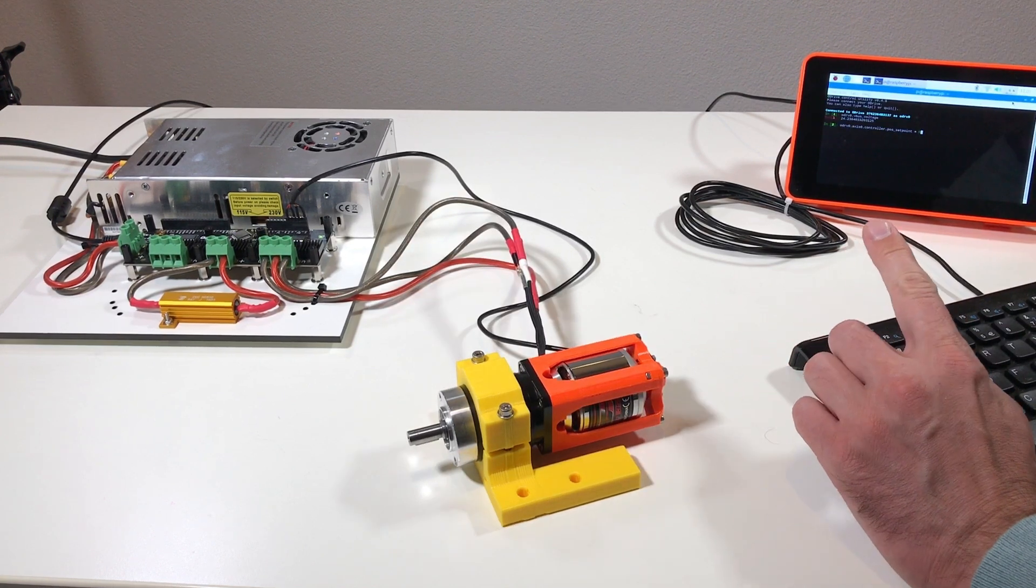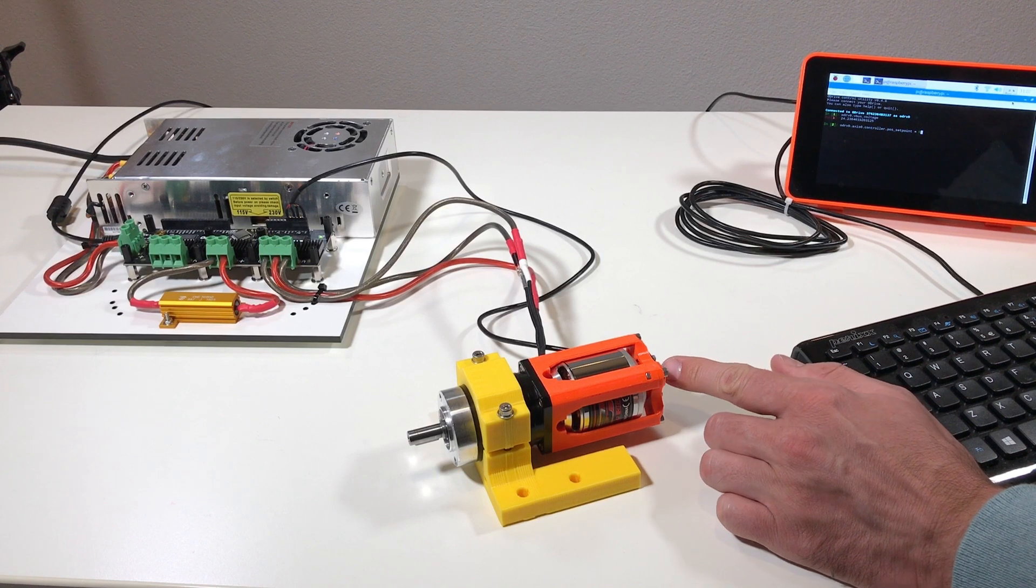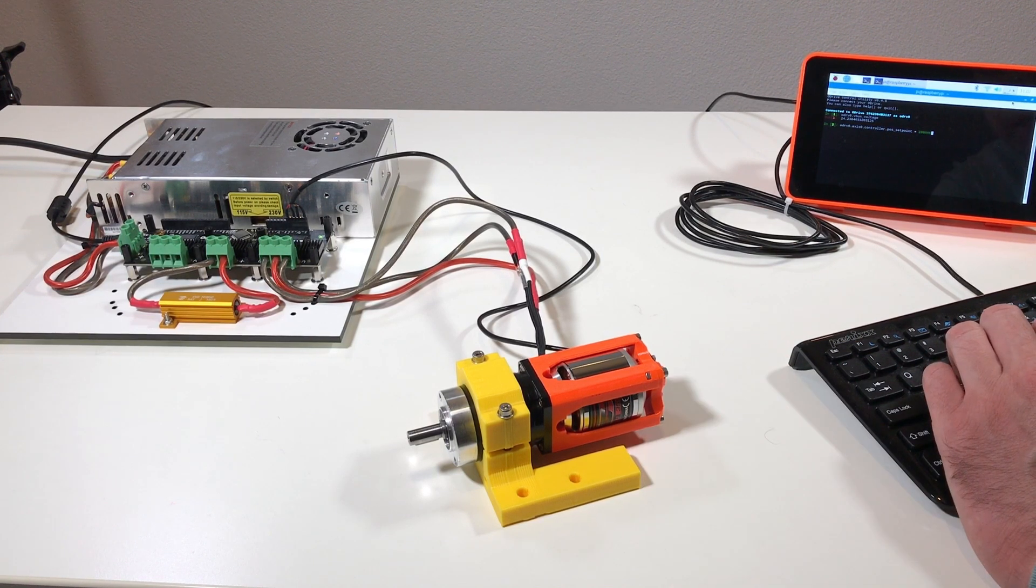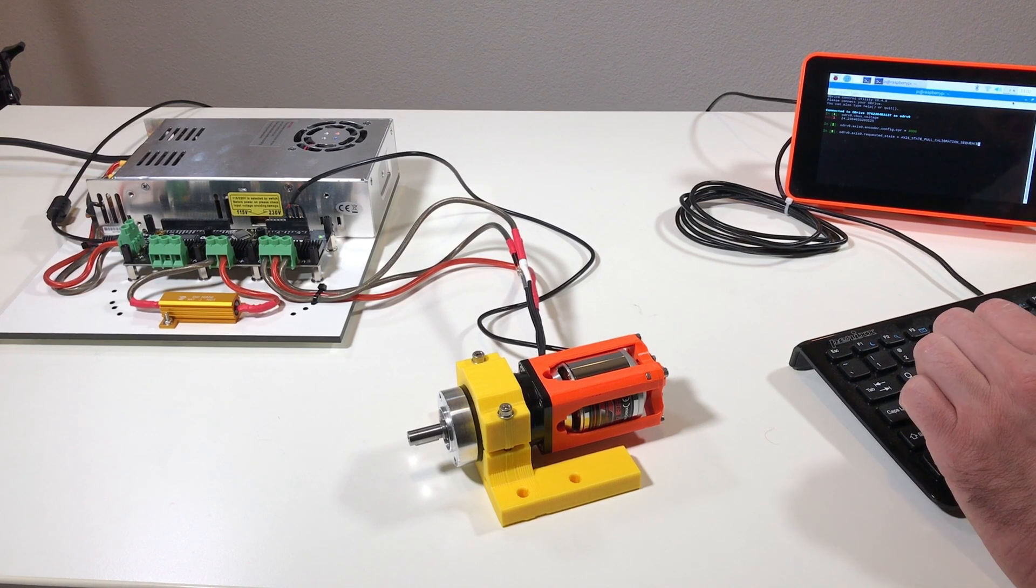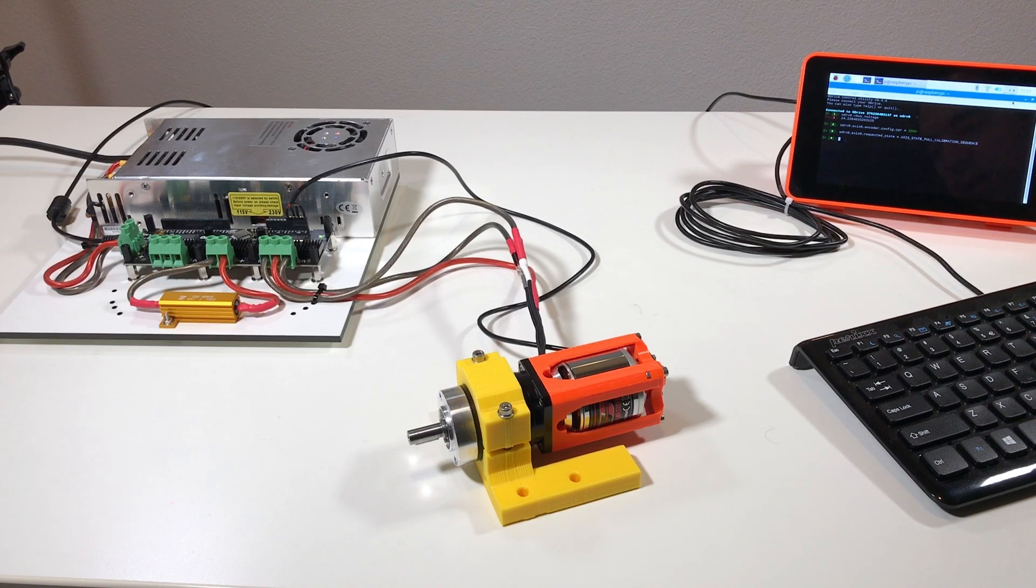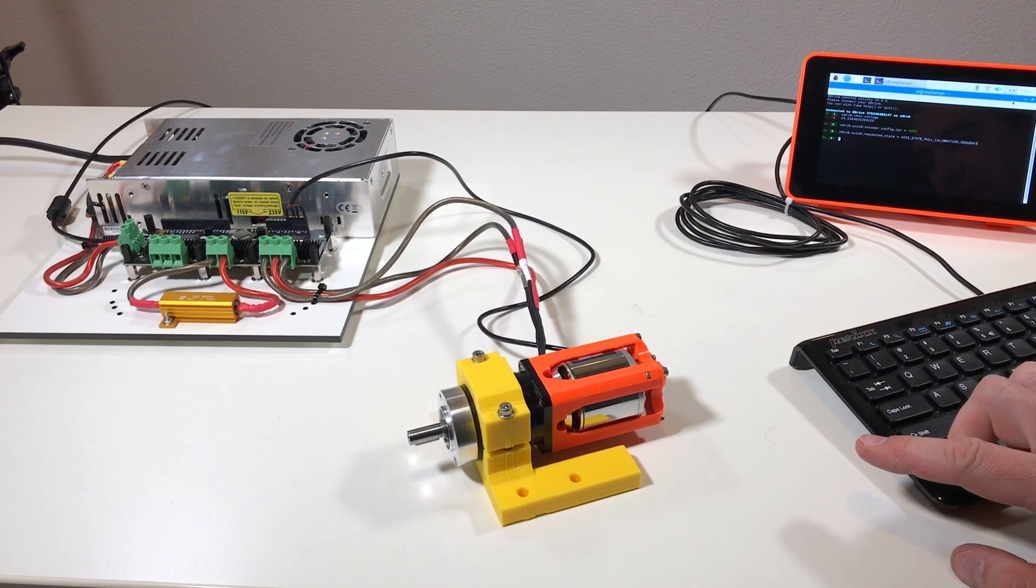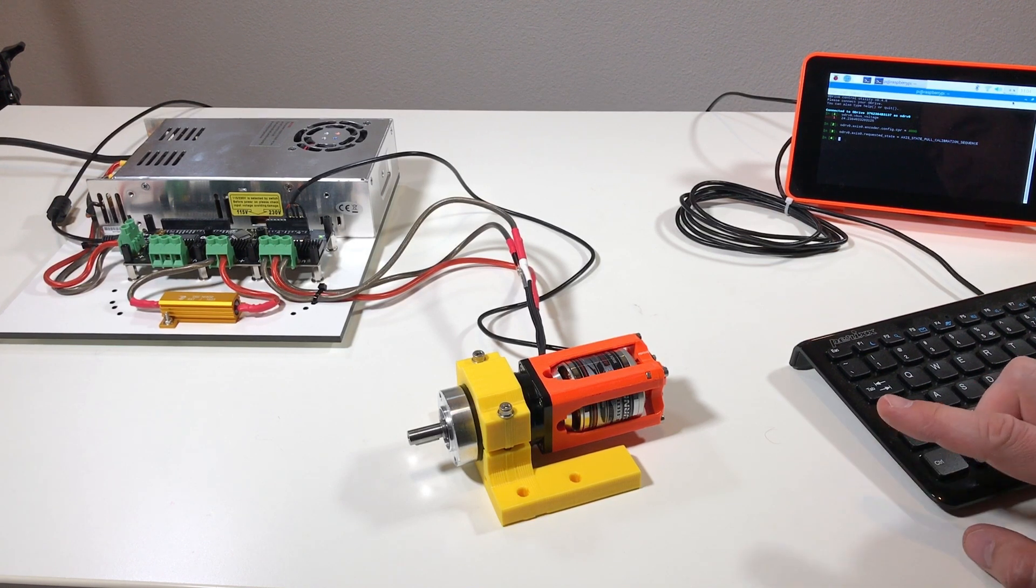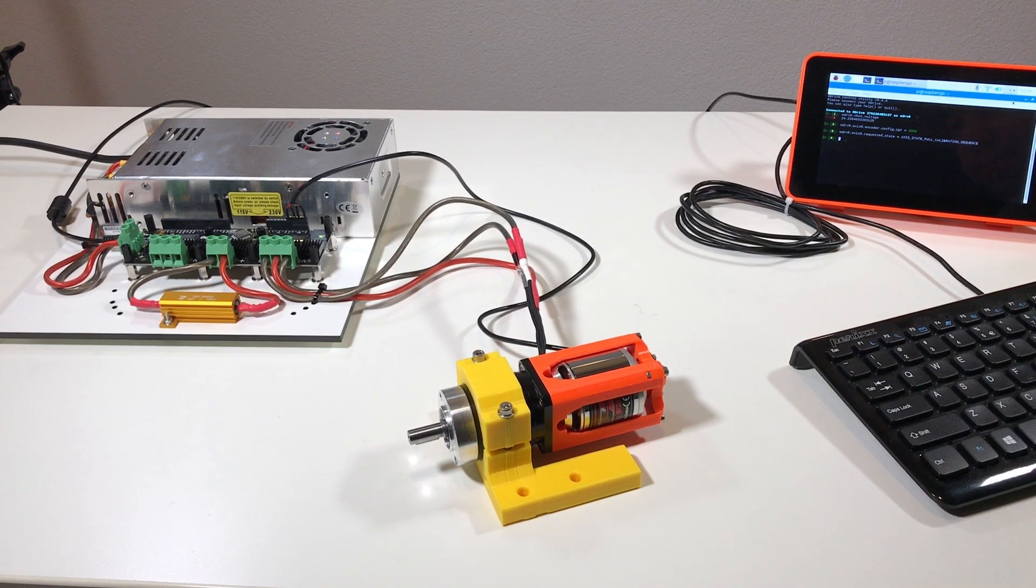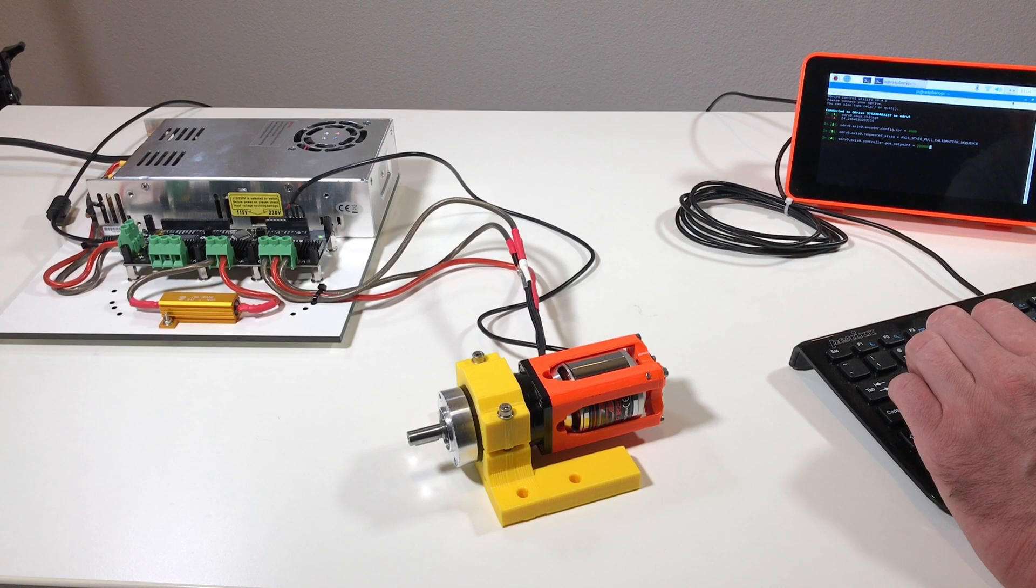Next I need to tell the O-Drive the proper number of the CPR for this encoder. And I think it's 4000. And now I'm ready to do the full calibration sequence. This is a good sign. It rotates in one direction. And it rotates in another direction. Usually this means that everything is okay and it's well calibrated.